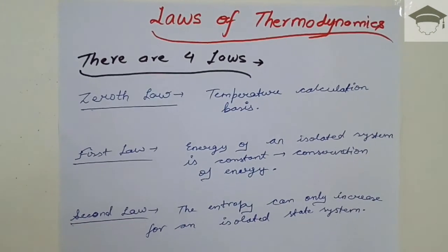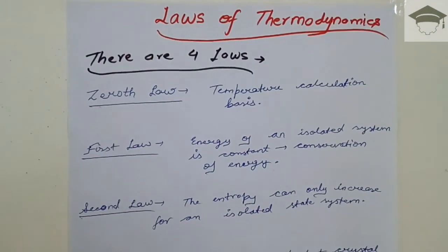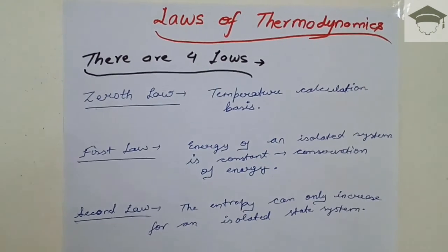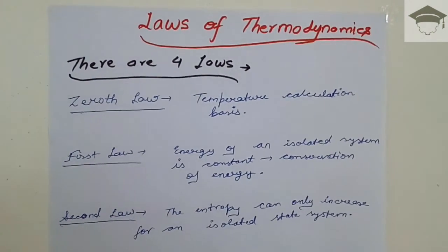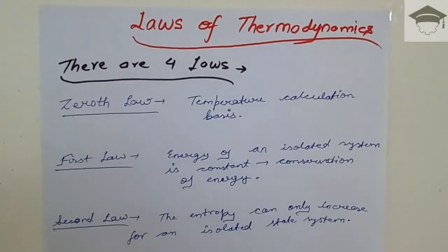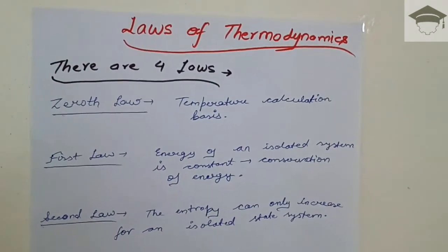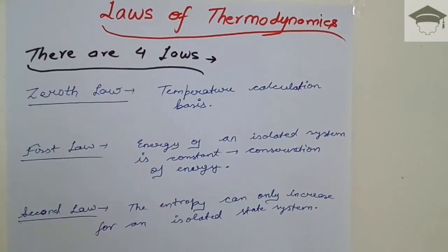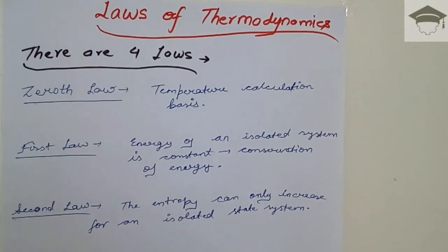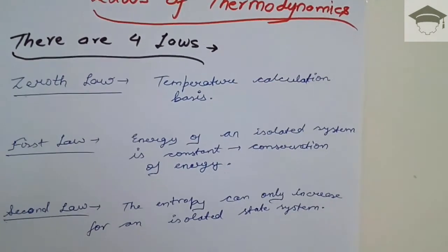Now entropy is a system variable and it is given by the amount of heat interaction divided by the temperature at which the heat is interacted.